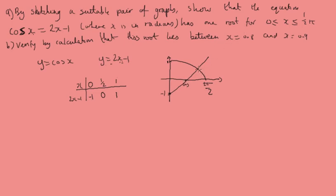There we go and it'll just keep going up as x increases. And so we can see it's going to cross at that one place. So the graph intersects only once. There's only one point of intersection. So cos x equals 2x minus 1 between 0 and pi over 2 has only 1 root.